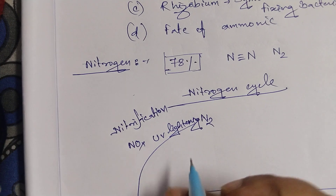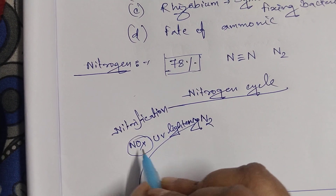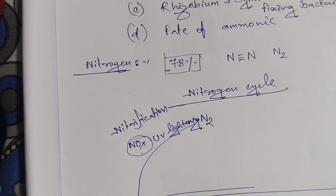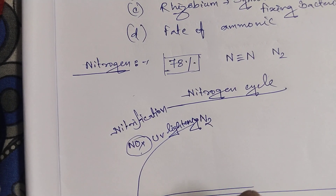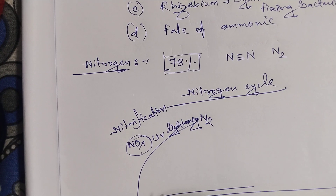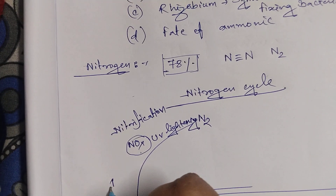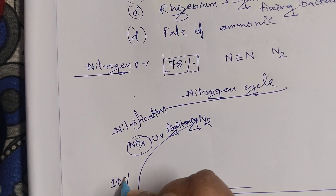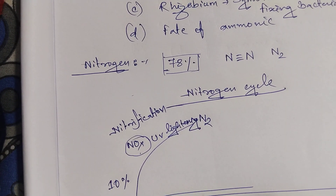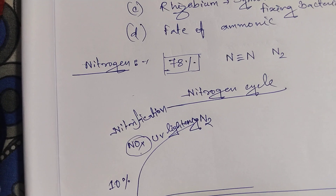In the case of abiological nitrogen fixation, nitrogen is converted into various nitrous oxides by UV lightning, and these oxides are converted into ammonia in the form of acid rain.